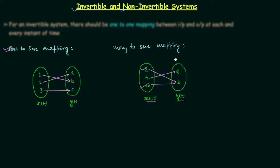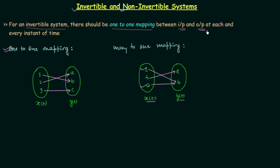This particular case is known as many-to-one mapping — many inputs producing the same output. So we are done with one-to-one mapping and many-to-one mapping, and now we can understand the definition of invertible systems. For an invertible system there should be one-to-one mapping between input and output at each and every instant of time. On the other hand, in case of non-invertible systems, instead of one-to-one mapping we have many-to-one mapping. Let's take two examples to understand this.